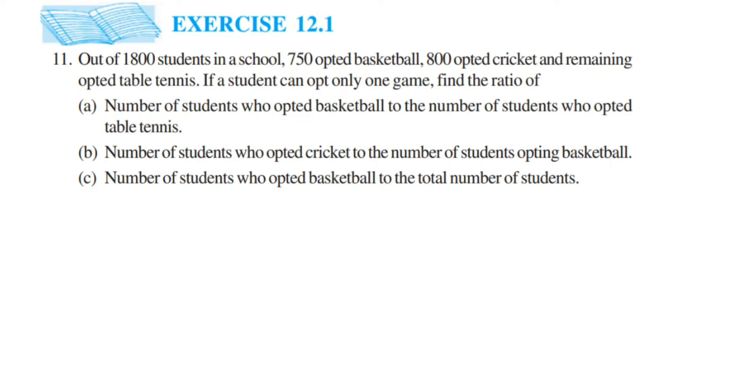Hello everyone, here is a question from Exercise 12.1, chapter Ratio and Proportion of Class 6. The question is: Out of 1800 students in a school, 750 opted for basketball, 800 opted for cricket, and remaining opted for table tennis. If a student can opt only one game, find the ratio of...